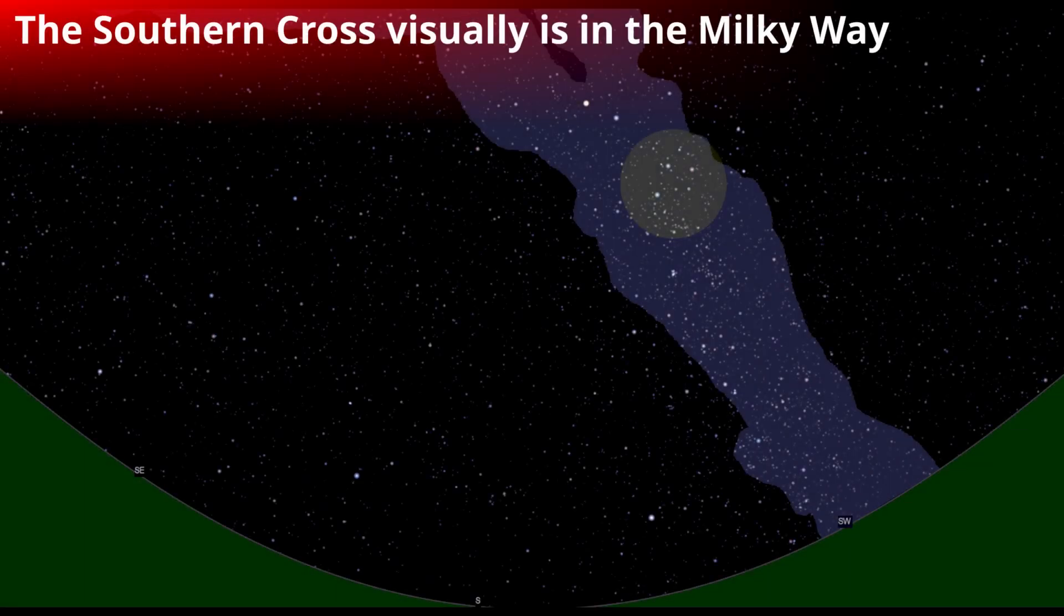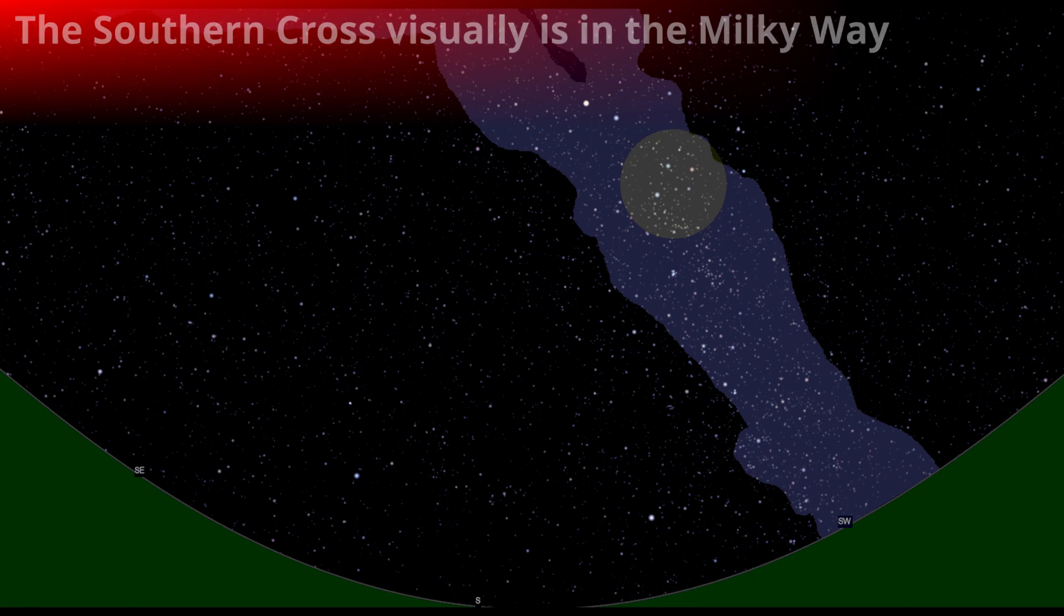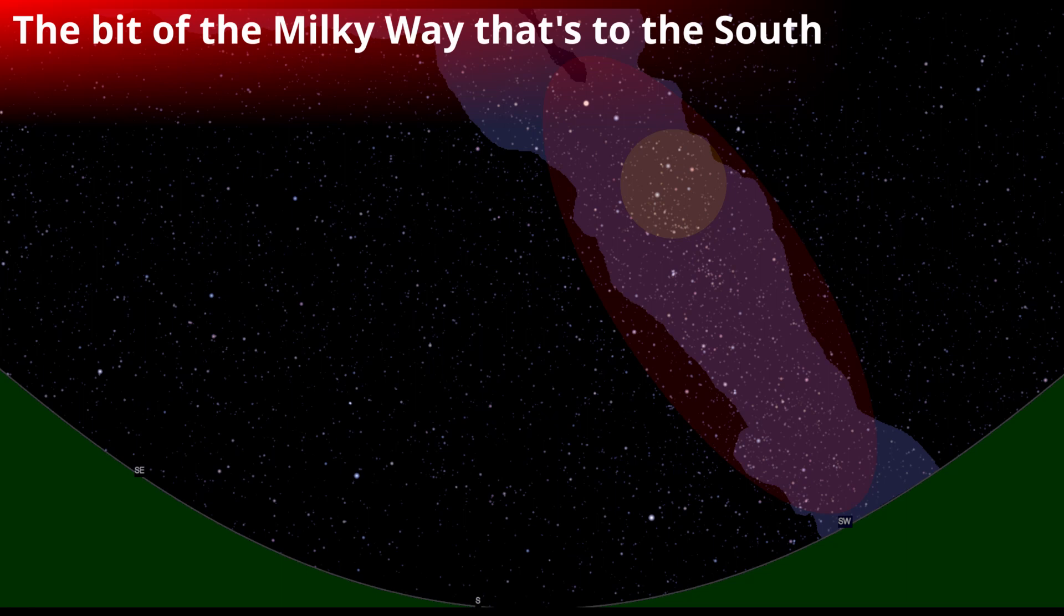The Southern Cross is inside the Milky Way, so you want to find a bit of the Milky Way that is always to the south. If you can't see the Milky Way, then turn your back to where you would see the sun or the moon crossing the sky. Now you're looking roughly south.